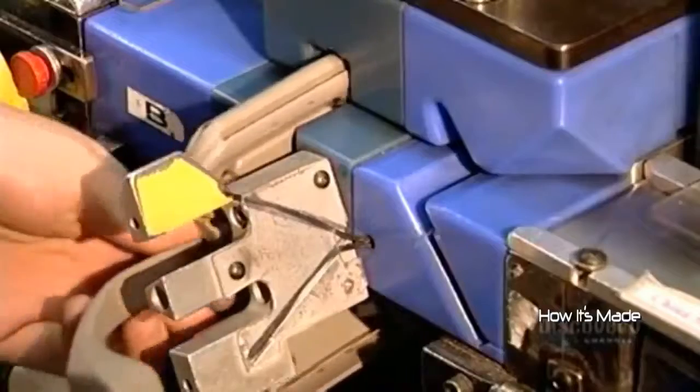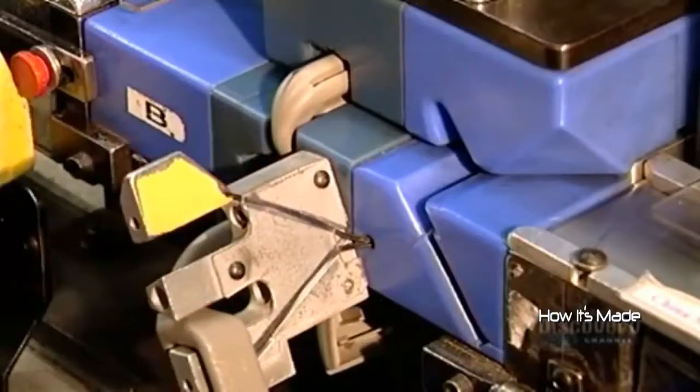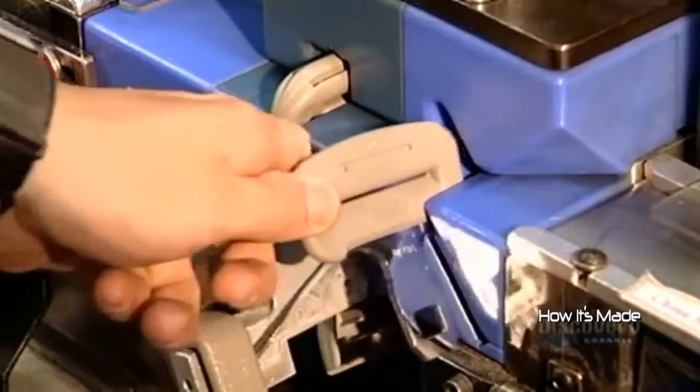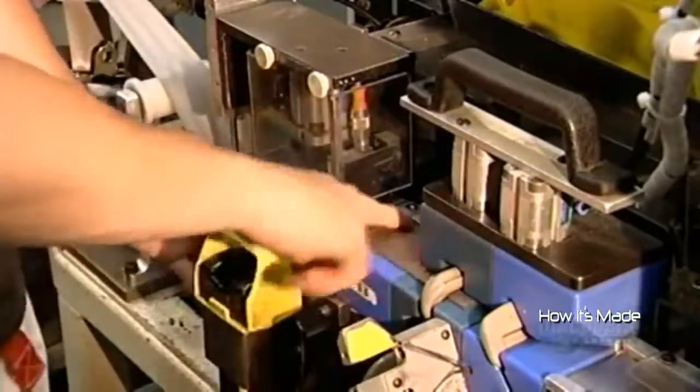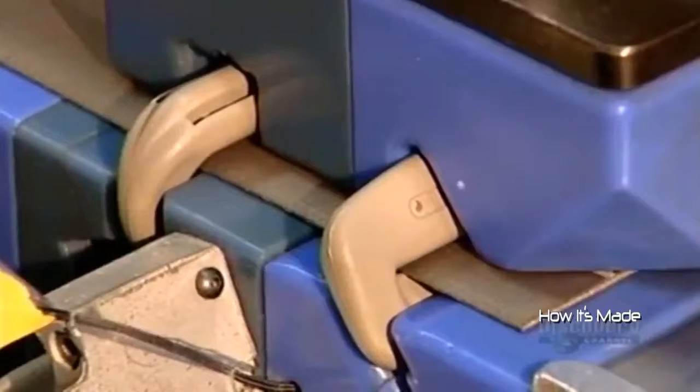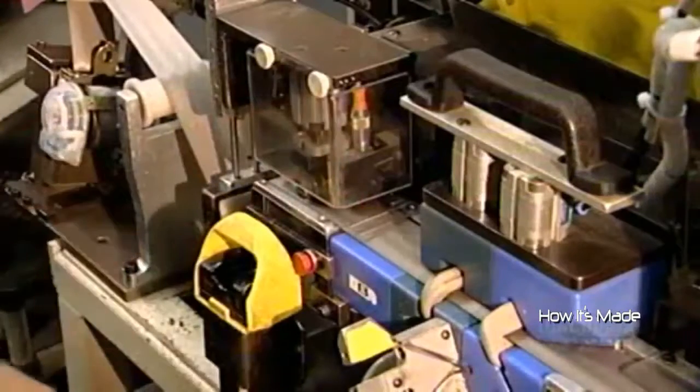Now for the final assembly. Workers load all the seat belt parts in a jig, a holding device that arranges them in the proper configuration. A worker feeds the webbing through the shoulder loop from which the belt hangs and through the tongue plate, the part that clicks into the buckle.